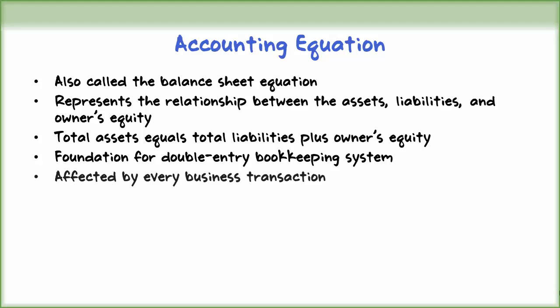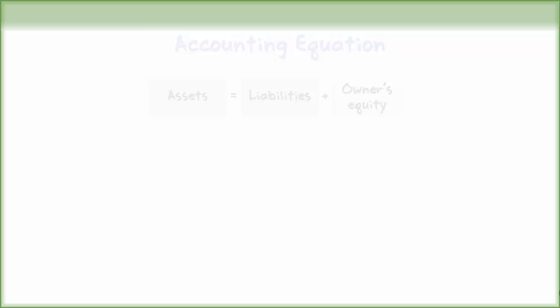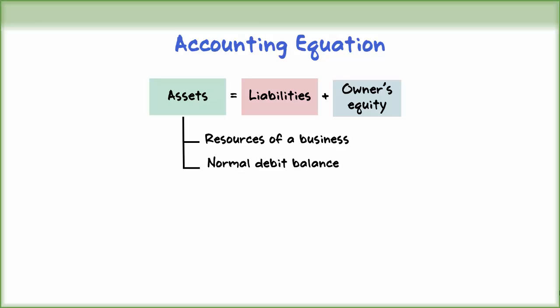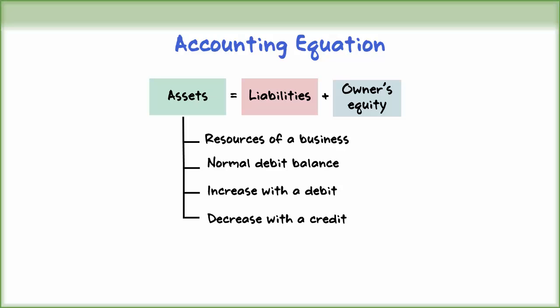Every internal and external transaction of a business will affect the accounting equation. Let's look at each category of the basic accounting equation. Assets are the resources of a business. They have a normal debit balance, increase with a debit, and decrease with a credit.